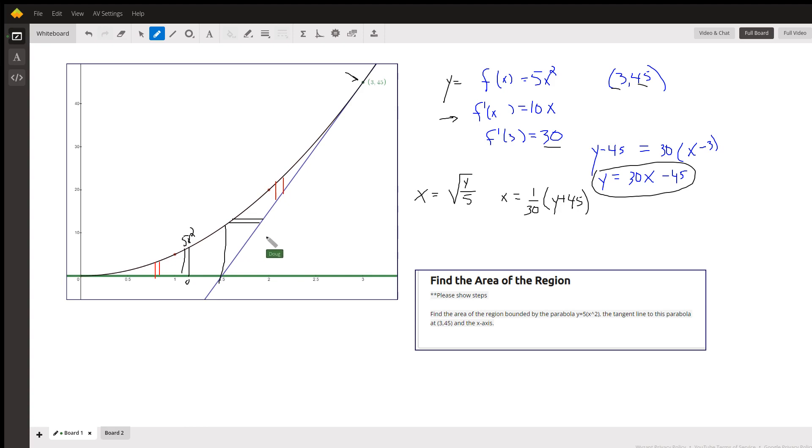But to the right of that vertical line, it's 5x squared at the top minus 30x minus 45, which is the y-coordinate at the bottom. So you'd have two separate integrals.